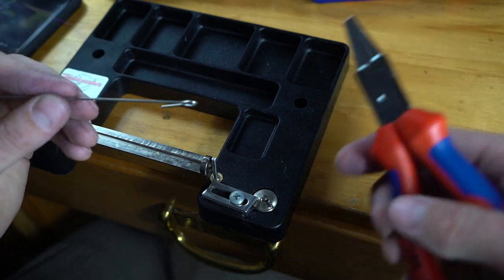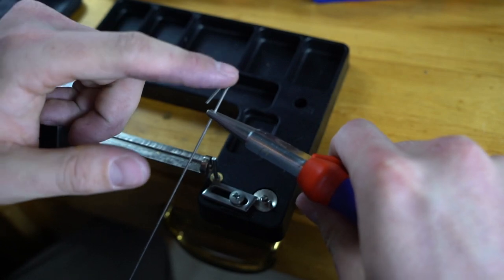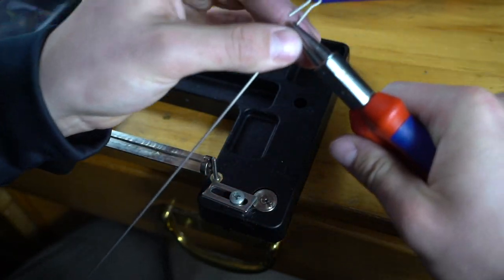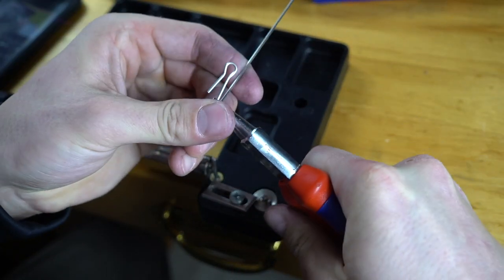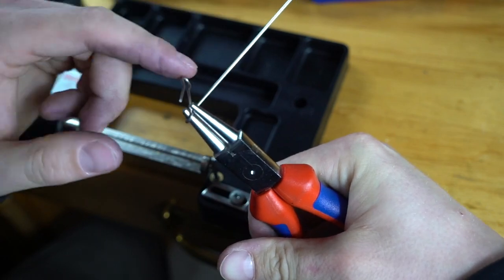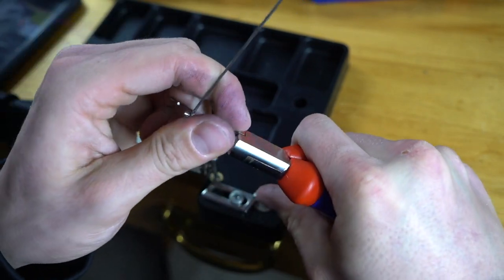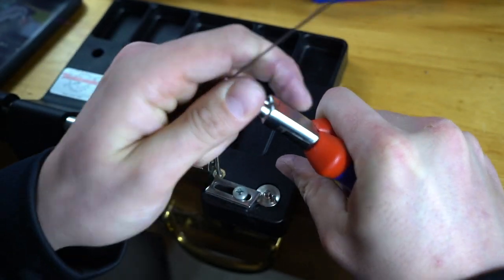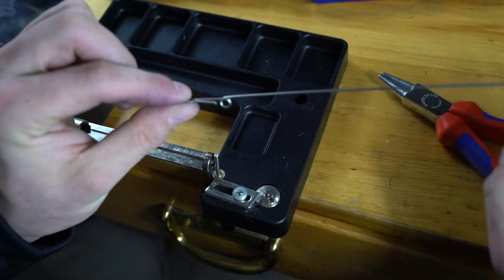From here, grab your round nose pliers. Stick it right on here—I like going on the same side as that. Take this long tag end and push it around. Once you get to the top here and you're hitting that top bar, spin your pliers and keep pushing it all the way around. Get it straight, and there's that.